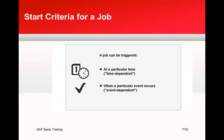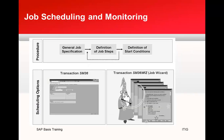The next thing is start criteria for a job. A job can be triggered at a particular time — we call these time-dependent jobs. When a particular event occurs, we call them event-dependent jobs. To create or schedule a job in SAP the transaction is SM36. In SM36 you define a general job description, define the steps, and define the start criteria. You can also use a job wizard.